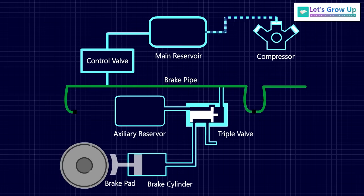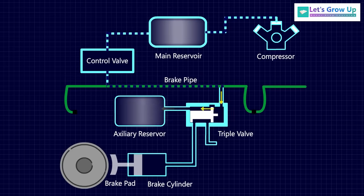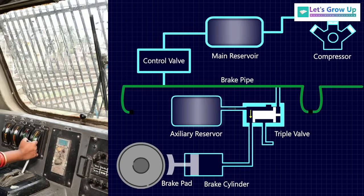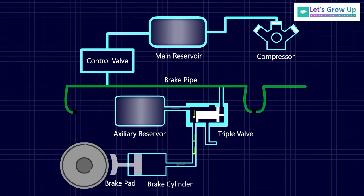The compressor takes air from the atmosphere and compresses it. This compressed air is sent to the main reservoir, then through the control valve it passes to the auxiliary reservoir. The air is supplied to the brake cylinder through the triple valve. The brake valve is controlled by the driver, who can control the intensity of braking according to the requirement. When the driver applies the brake lever, the pressure in the reservoir decreases, which pushes the brake pads toward the wheels and applies the brakes.